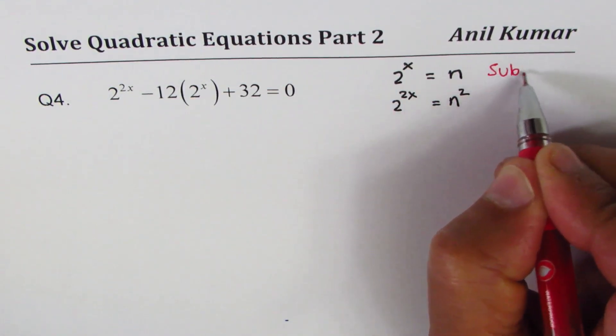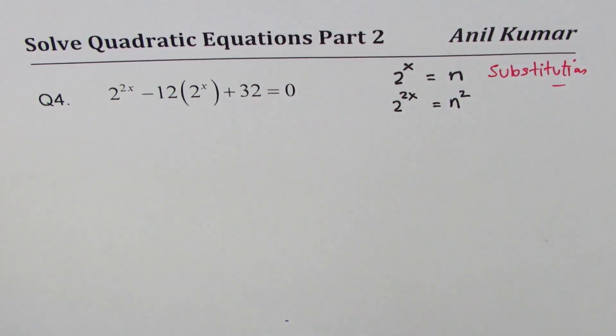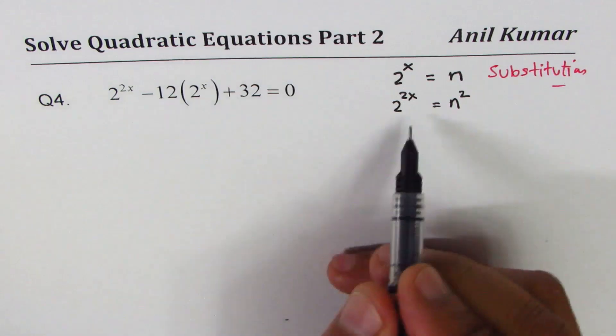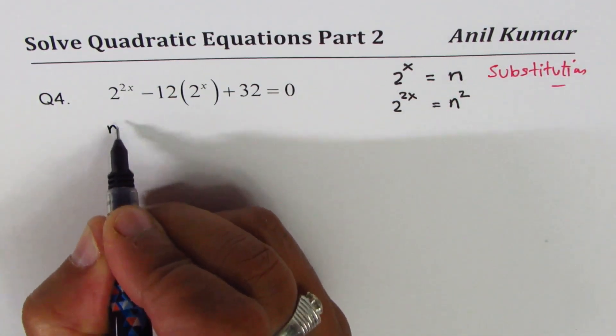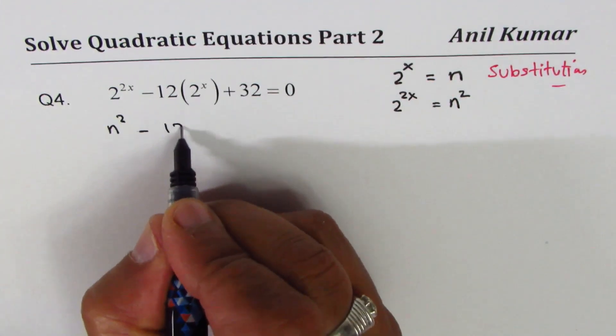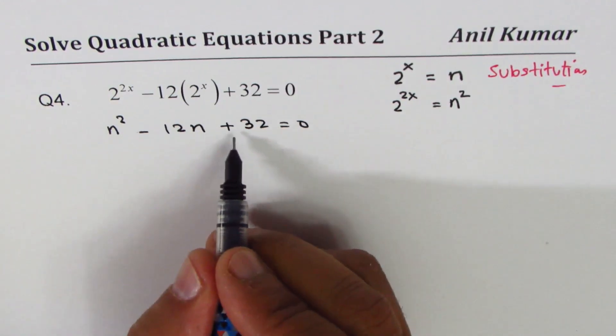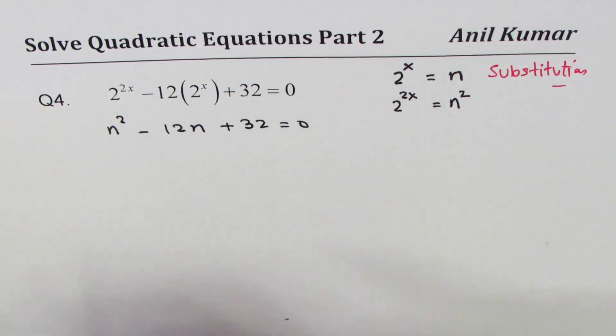So if I substitute 2 to the power of 2x as n squared and 2 to the power of x as n, what do I get? We get n squared minus 12n plus 32 equals to 0, which is a quadratic equation.